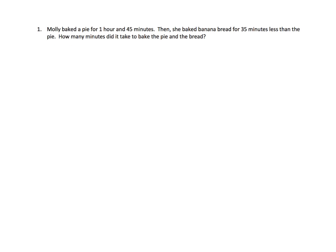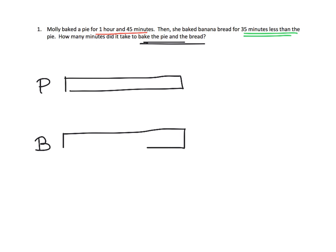It says, Molly baked a pie for an hour and 45 minutes. That seems important, so let's underline that. And then, she baked a banana bread for 35 minutes less than the pie, so that seems important. And then, how many minutes did it take to bake the pie and the bread? We're going to assume that the pie and the bread are not baking at the same time, that they are separate. So, you've got pie, and you've got bread, and we're gonna start by drawing the same length unit bar for each of them, tape diagram.